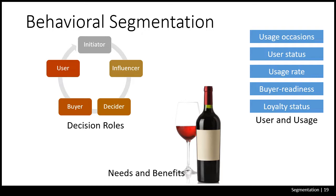Consider a two or three-year-old with a tricycle who has outgrown it and needs a bigger bike. You may be the initiator — or the wife might tell you your daughter needs a new bike. The child may be the influencer, going to the store to help pick one out. You may be the ultimate decider and buyer, but the child is the user. This is why children's breakfast cereal is advertised during kids' shows — because the child influences which cereal gets bought.